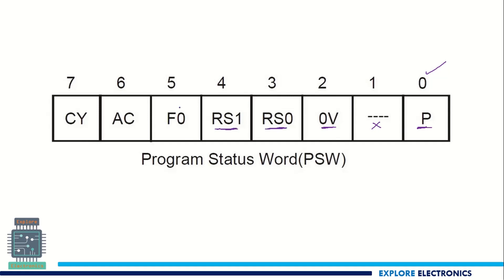The fifth bit will be F0. This is for general purpose. The sixth bit will be auxiliary carry. The seventh bit will be carry flag.